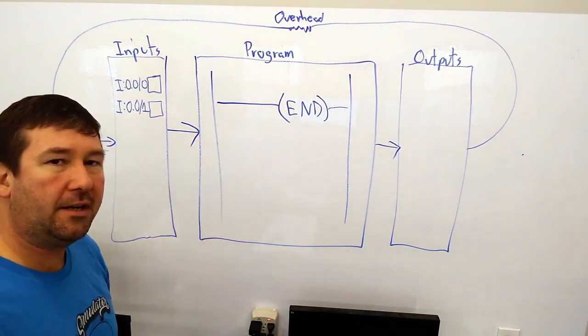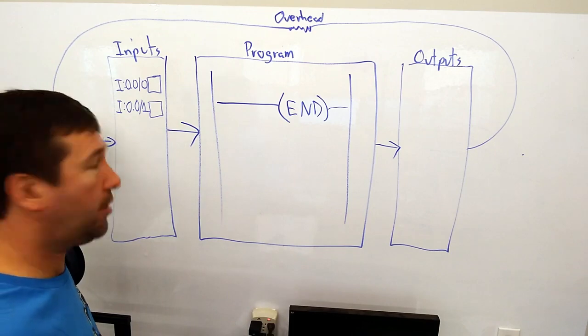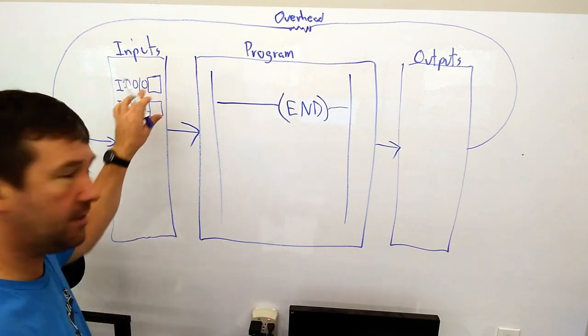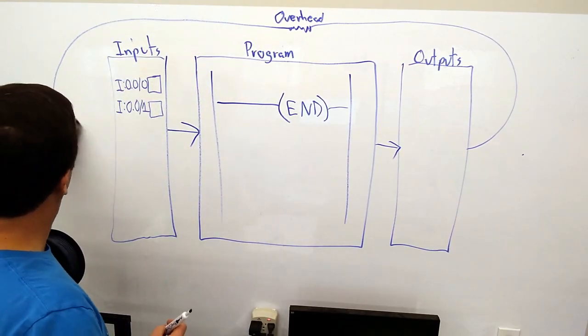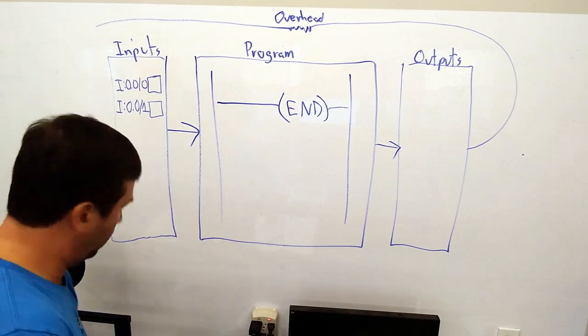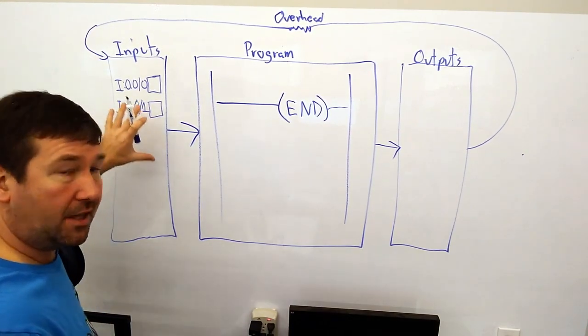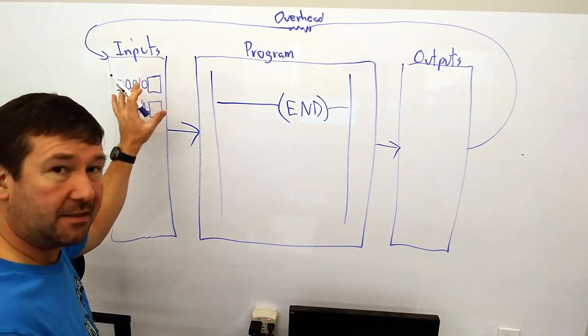But when you read an input in a program, are you actually reading the physical input, or are you reading these boxes? The answer is you're actually reading these boxes. And at this first step right here, I'm actually going to move this up to give us a little more room. At this first input step, it actually looks at all of its physical inputs and updates these boxes.